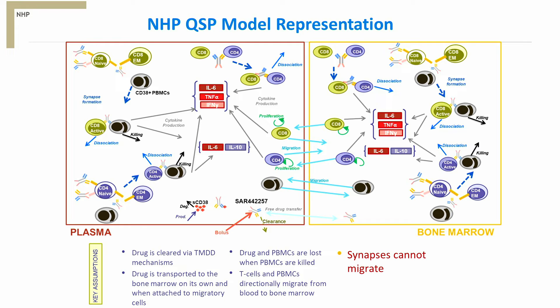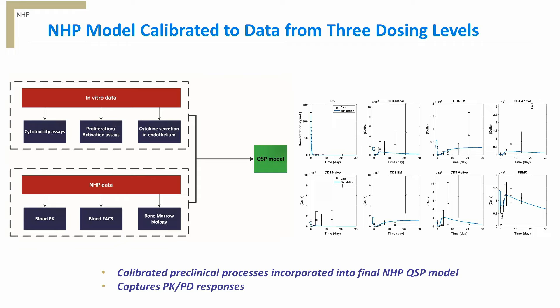With some of the key model assumptions stated below, it is important to note that while individual cells can reversibly traffic between compartments, two-cell synapses mediated by tri-specific antibody binding cannot migrate. Incorporating the previously parameterized processes from the in vitro model into the NHP model structure and updating the system to appropriately represent blood and bone marrow biology, we then calibrated remaining unknown parameters to capture the measured PKPD responses across three dosing levels.